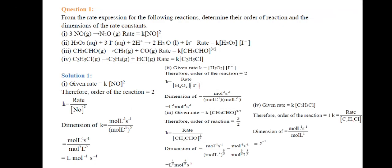First question: from the rate expression of the following reactions, determine their order of reaction and the dimensions of the rate constant. For reaction (a): 3NO(g) → N2O(g), rate is given by rate = K[NO]². Therefore, the order of reaction is 2, because the order depends upon the power to which the reactant concentration is raised. So the order of reaction is 2.